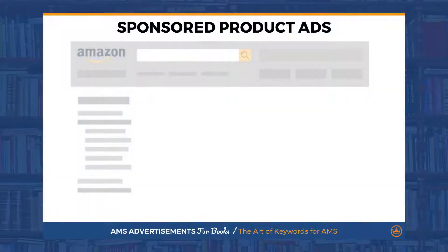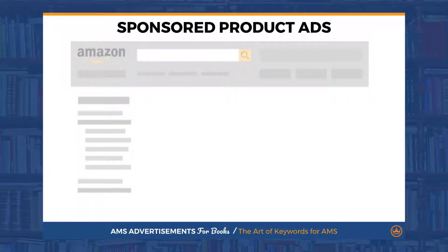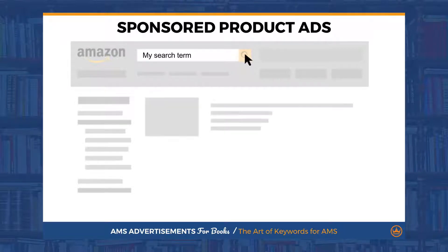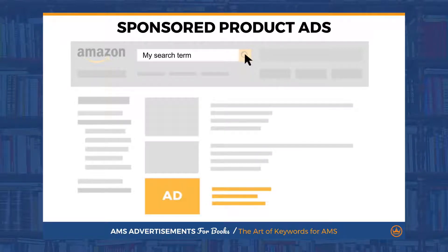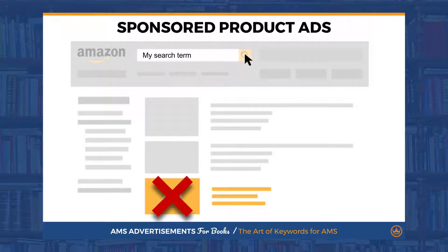Sponsored ads show up when someone types in their search term, clicks search, and the resulting books are displayed. Therefore, our keywords for AMS need to be words that people would type into the search box. When it comes to AMS keywords, there are two types I like to focus on.